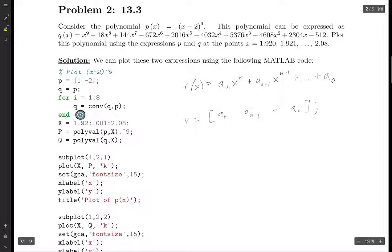So if you actually print out what this lowercase q is at the end of this for loop, the first entry is one, the second entry is minus 18, and the last entry is negative 512. So capital P and capital Q are what you get when you use these two different expressions to evaluate this polynomial at different x values. And so I just plotted them and this is the result.